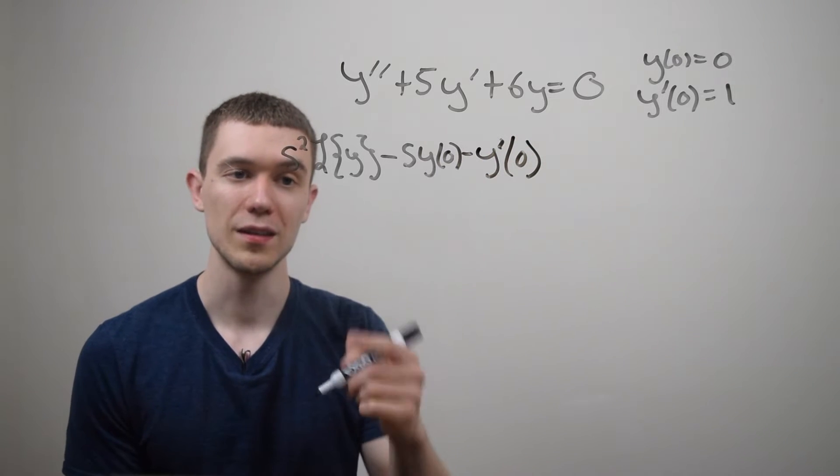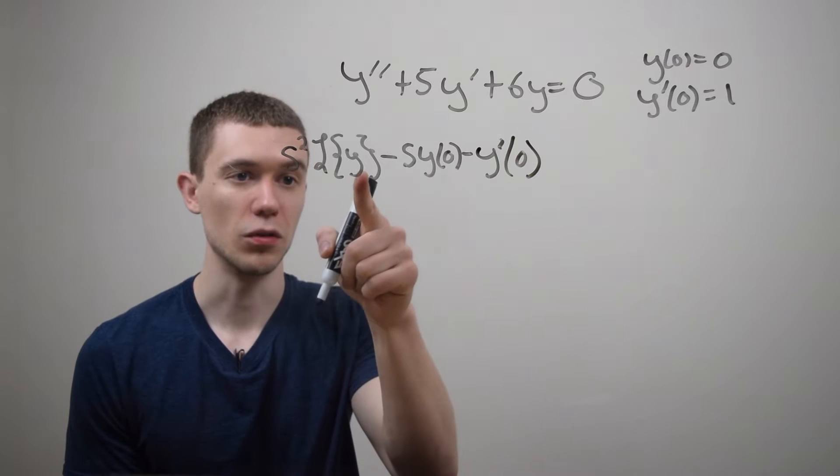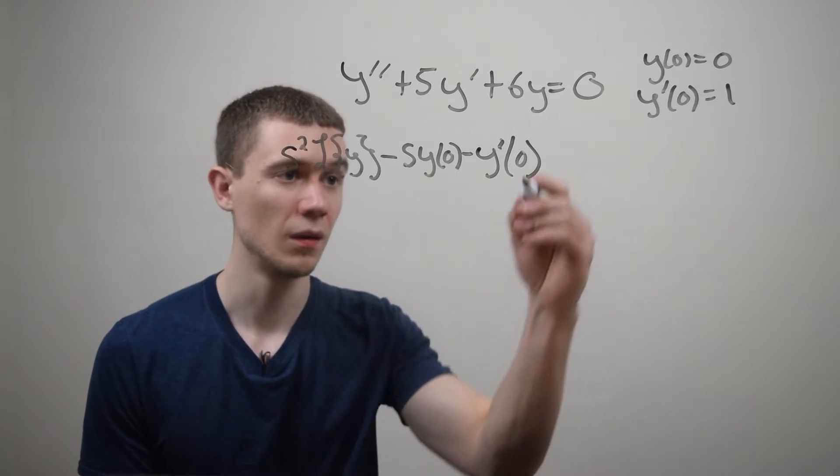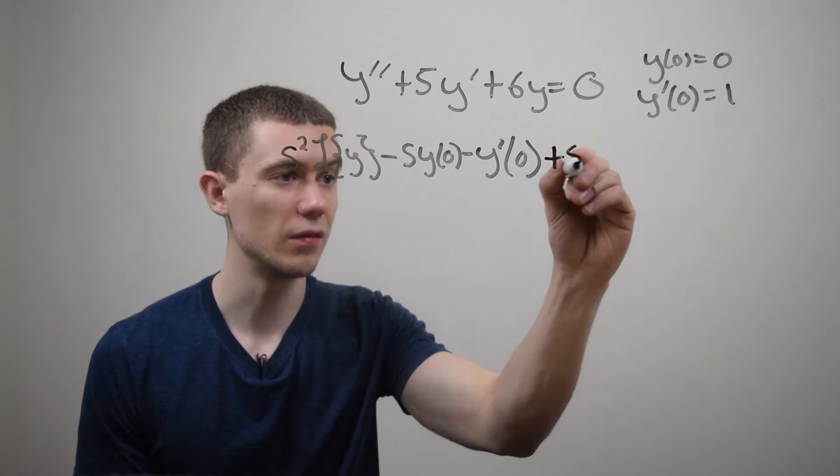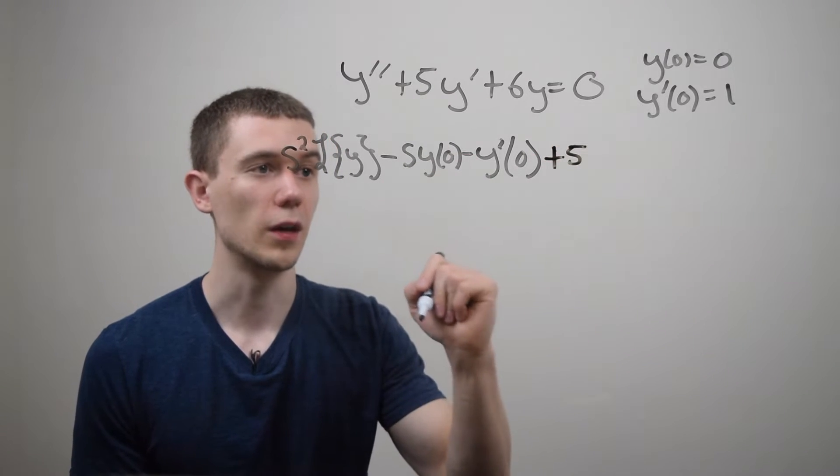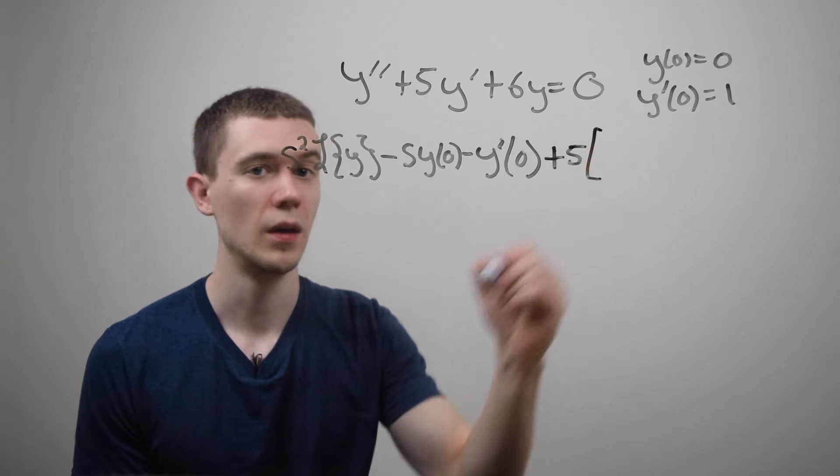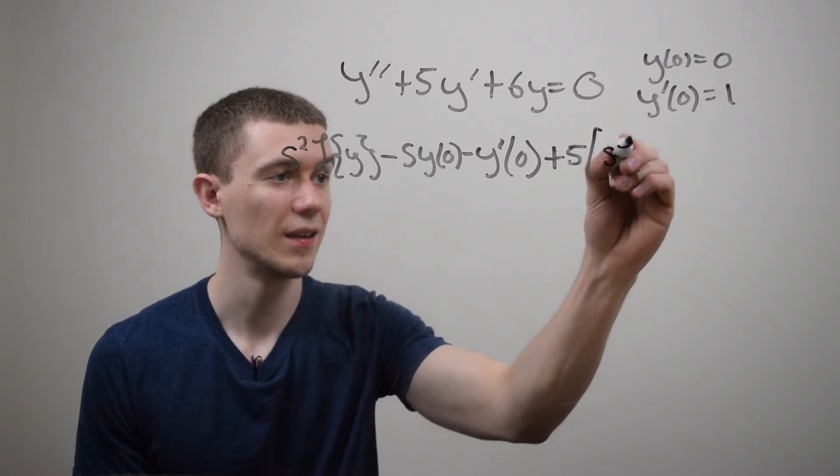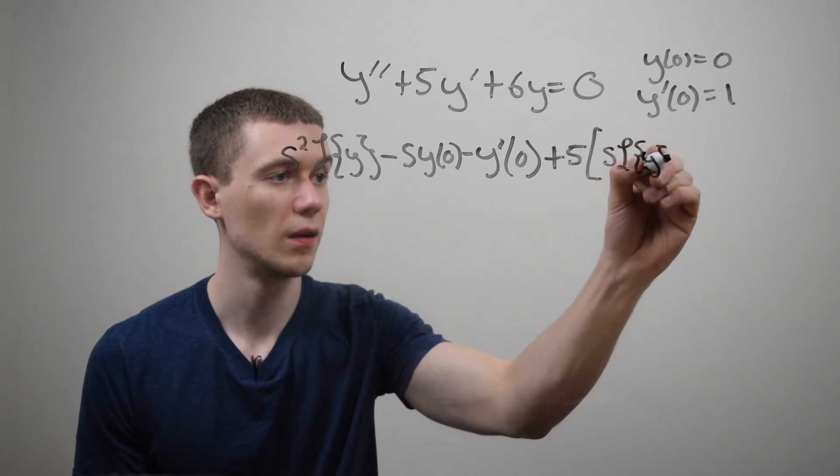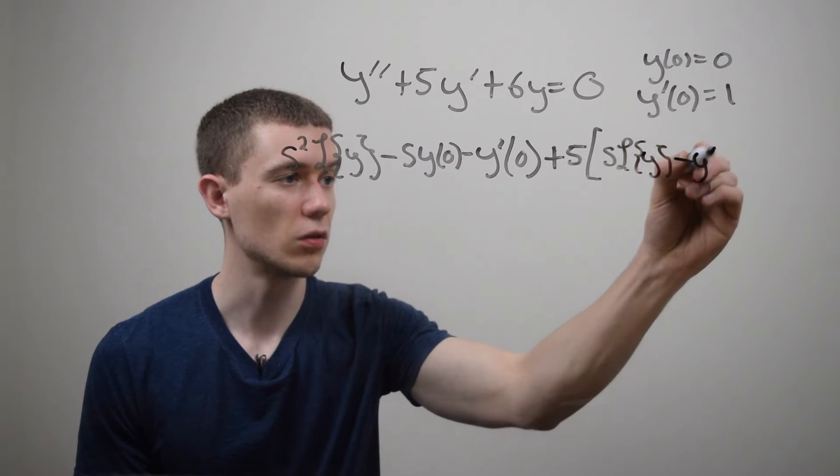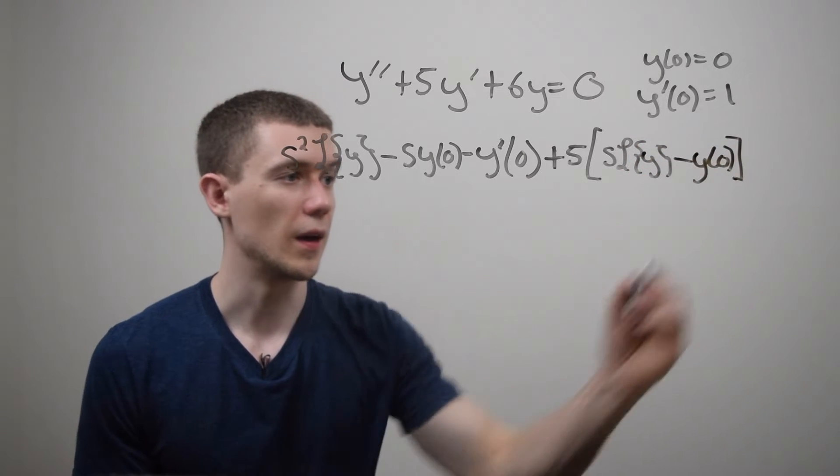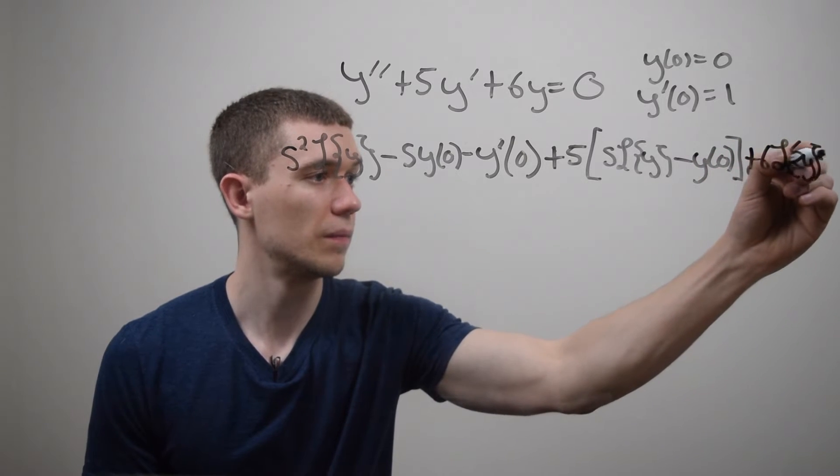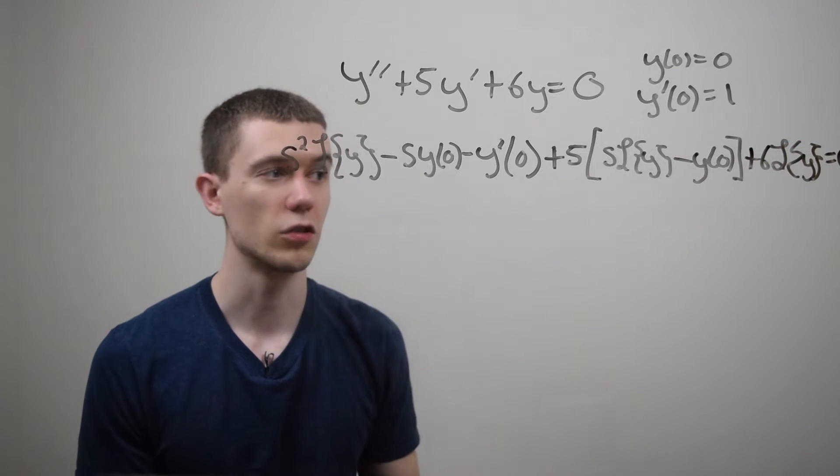So when you're doing this you sort of count down by s's and you also count down by initial conditions. That's sort of how I remember this. Then I would have plus five from this five times the Laplace transform of y prime. It's the same sort of rule. So the Laplace transform of y prime is s times the Laplace transform of y minus the first initial condition. And then I've got plus six times the Laplace transform of y is equal to zero. The Laplace transform of zero is zero.